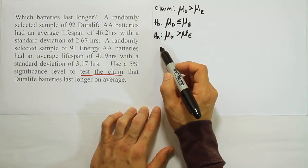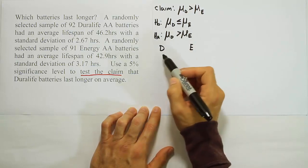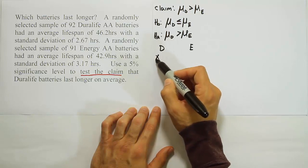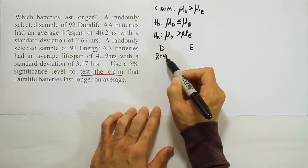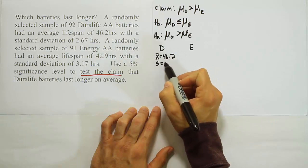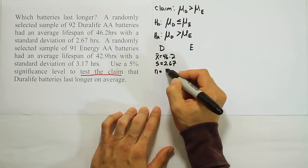we're going to collect the data. So we should have a set of data for the Duralife batteries, a set of data for the energy batteries. For Duralife we have the mean being 46.2. We have the standard deviation of 2.67. And we have that n is equal to 92.